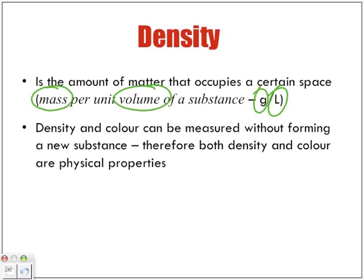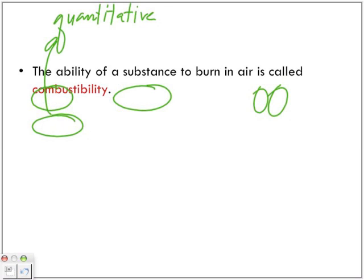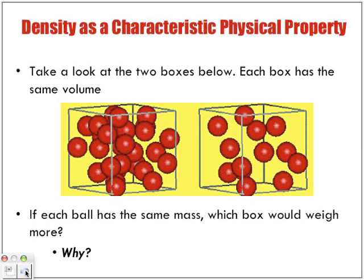In the previous chapters we looked at physical and chemical properties. Measuring density is quantitative and is a physical property, as is color. No new substance is formed—it's just a measurement that we're taking. Therefore, both density and color are physical properties.